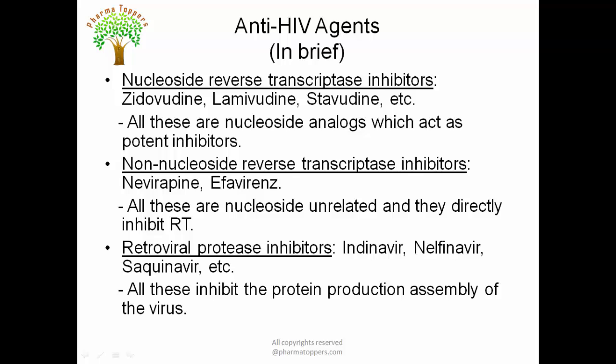This class includes nucleoside reverse transcriptase inhibitors (NRTIs) such as zidovudine, lamivudine, and stavudine — nucleoside analogues which act as potent replication inhibitors. Next, we have non-nucleoside reverse transcriptase inhibitors (NNRTIs), which are not related to any nucleoside or nucleotide but directly inhibit the enzyme reverse transcriptase. Finally, there are retroviral protease inhibitors, which inhibit the enzyme protease responsible for protein production and viral protein assembly — examples include indinavir, nelfinavir, and saquinavir.